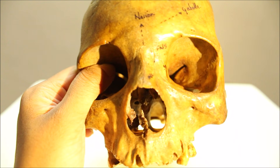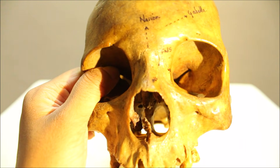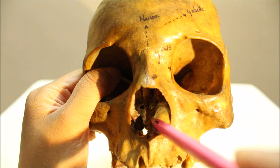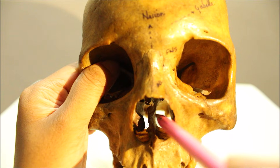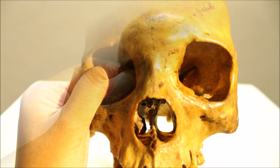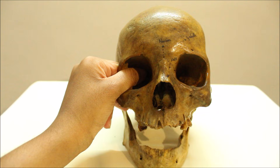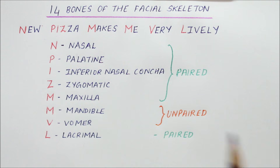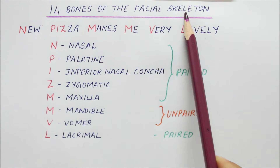Moving on to the unpaired bones: the vomer, and the mandible, which is another unpaired bone. That gives us the 14 bones of the facial skeleton.